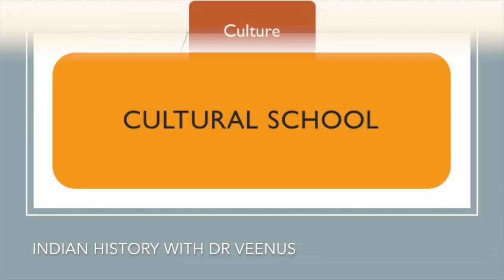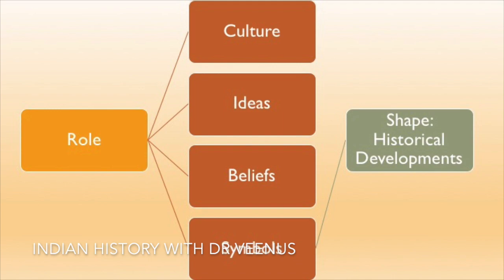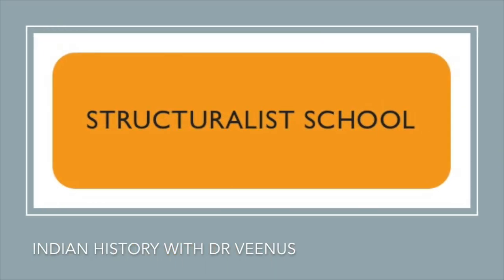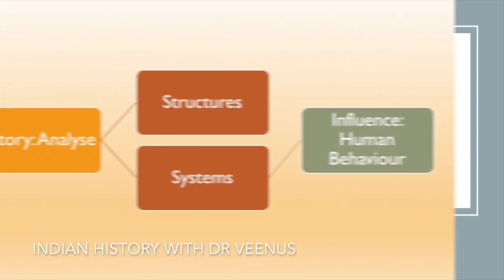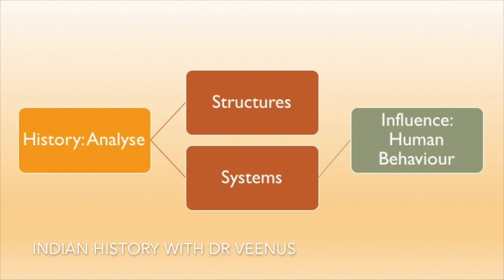Cultural school: Cultural historians study the role of culture, ideas, beliefs, and symbols in shaping historical developments. Structuralist school: Structuralist historians analyze history by examining the underlying structures and systems that influence human behavior.